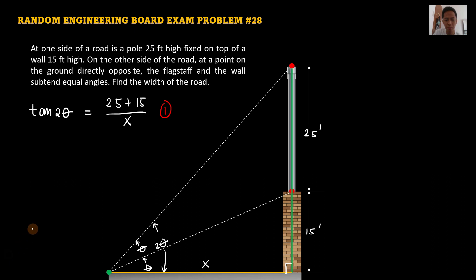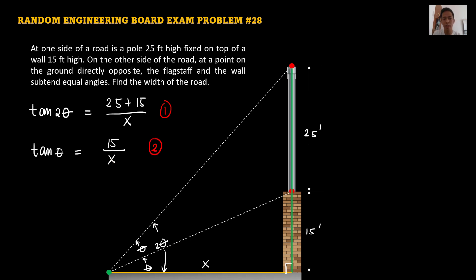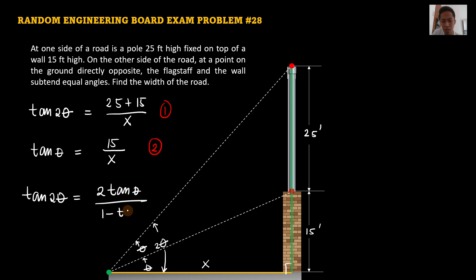For the second equation, we use the smaller right triangle. Tangent of theta equals its opposite side, which is 15 feet, over its adjacent side, which is the width of the road x. Using these two equations, we can find x. The fastest way is using the shift solve function on your calculator, but to solve manually we use the trigonometric double angle identity for tangent: tangent of 2 theta equals 2 tan(theta) all over 1 minus tan²(theta).